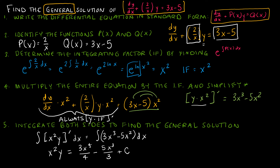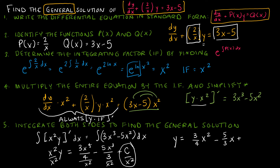Typically we write this in a simpler form, so y equals everything divided by x squared. That gives 3x squared over 4 minus 5x/3 — since 5x cubed over 3 divided by x squared gives 5/3 x — plus c. You don't need to write x squared beneath the c because dividing by x squared just gives another constant. So this is our general solution.